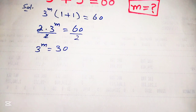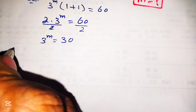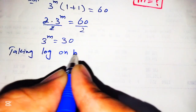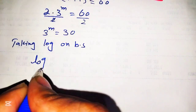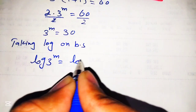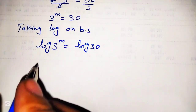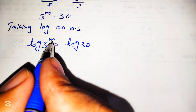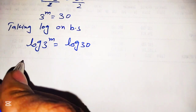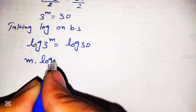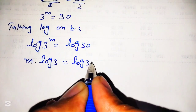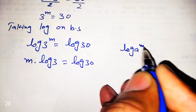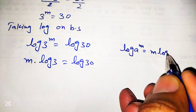Now to find the value of m, we will take logarithm on both sides. Taking log on both sides we get log of 3 raised to the power m is equal to log of 30. According to the property of logarithm, this power multiplies with the factor, so we get m into log of 3 is equal to log of 30. This is according to the formula: log of a raised to the power m is equal to m into log of a.